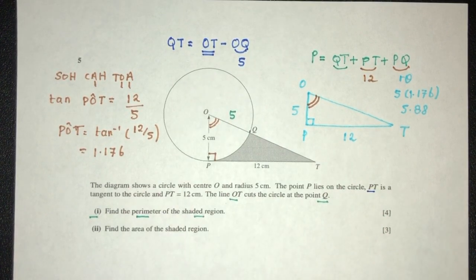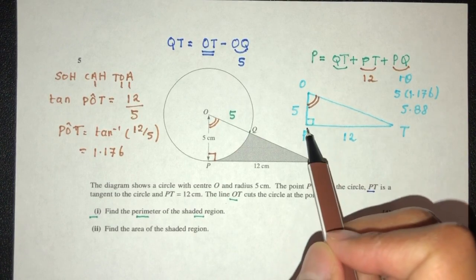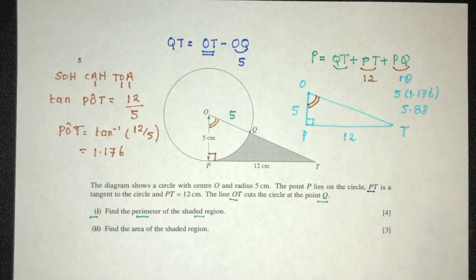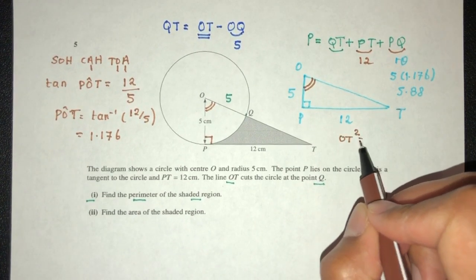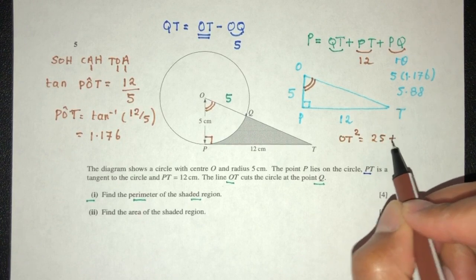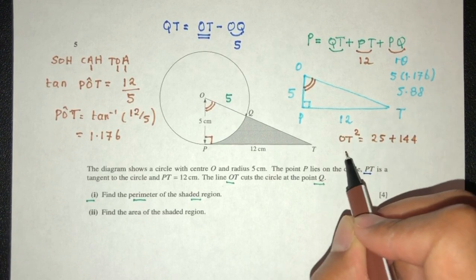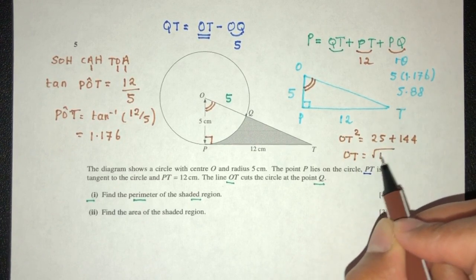OT can be found by using the Pythagorean Theorem. We have this side, this side. It is a right angle triangle, so we can use that. So OT squared will be 5 squared plus 12 squared. So OT will be root of 169.